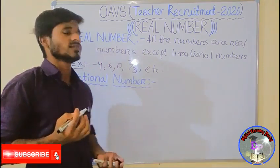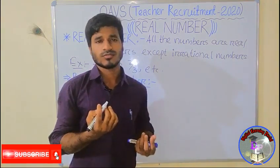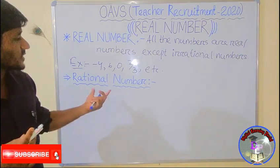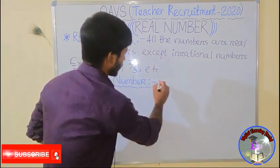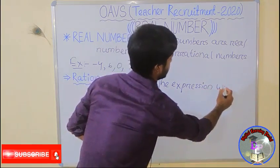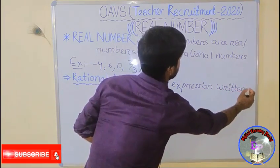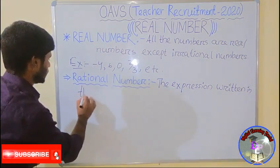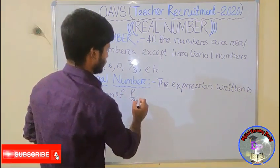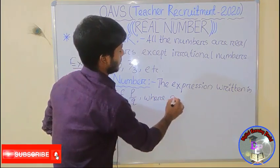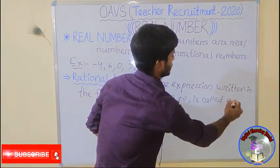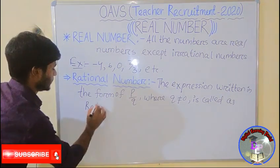On a real number, except the irrational number — for example, 2 root 3 — that belongs to the irrational numbers. Then we are going to define the rational numbers. The expression written in the form of p by q, where q is not equal to 0, is called a rational number.